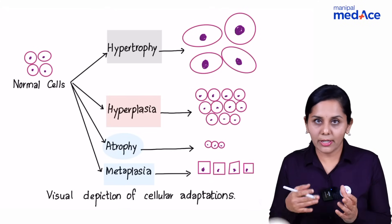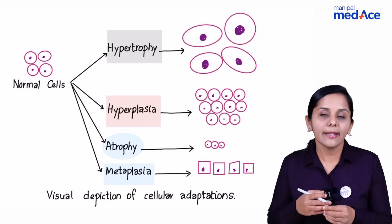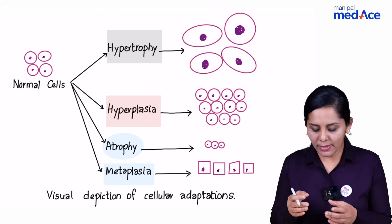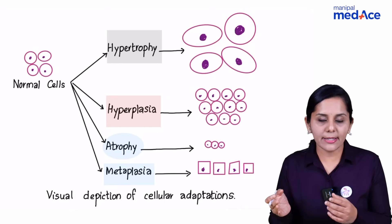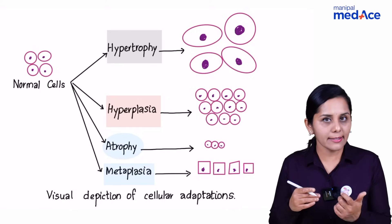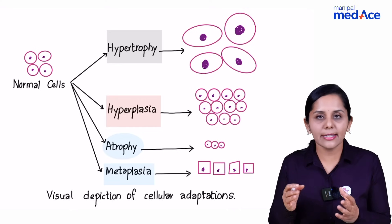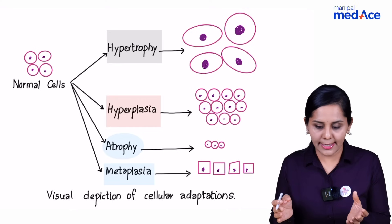When the cell is able to divide enormously, then the mechanism of adaptation is hyperplasia. There is an increase in the number of cells, resulting in an increase in the organ size.